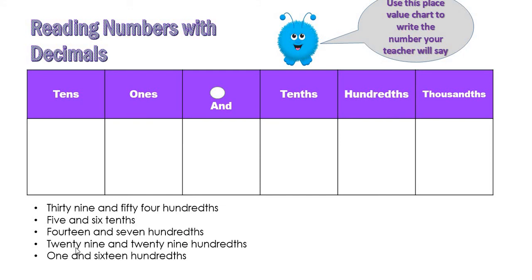Twenty-nine and twenty-nine hundredths — 29 is the whole number, this is the decimal point. One and sixteen hundredths — one is the whole number, decimal point, sixteen hundredths. This is the last place value.